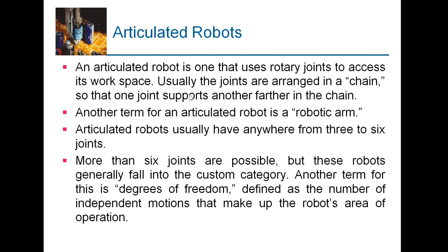The first type of robot, and most popular, is the articulated robot. An articulated robot is one that uses rotary joints to access positions. Usually the joints are arranged in a chain so that one joint supports another further in the chain. Articulated robots usually have anywhere from three to six joints. It can have three or more than three axes, going up to six axes.